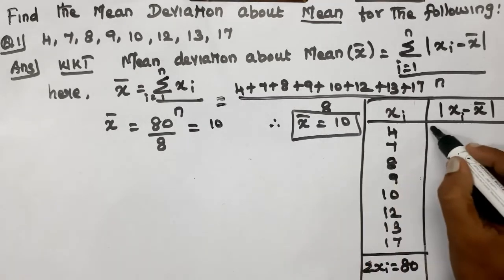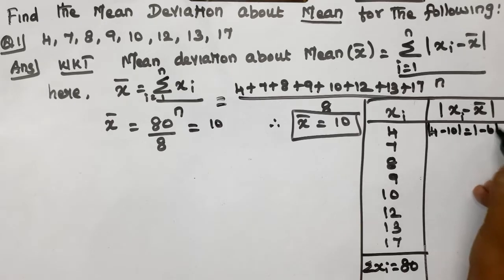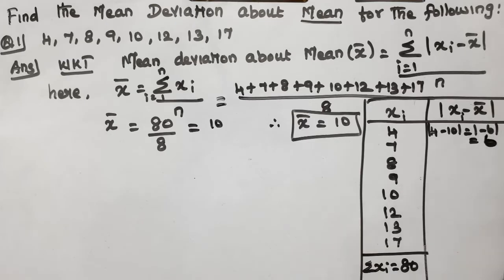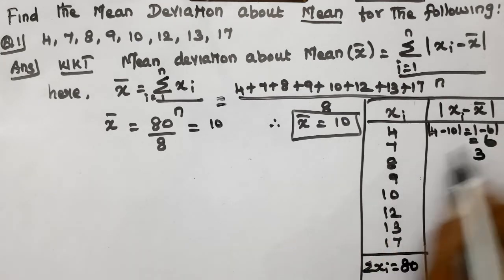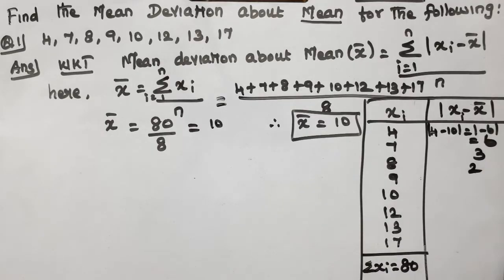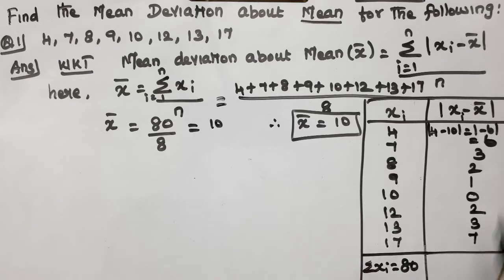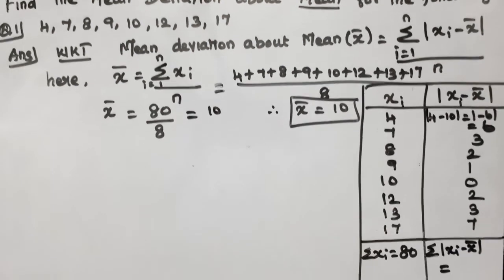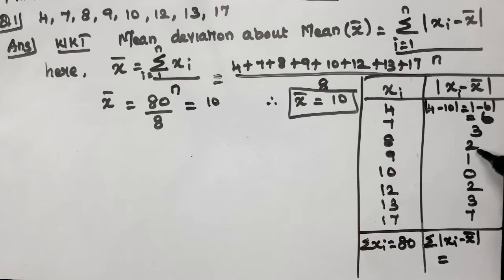Computing x_i minus x_bar: 4 minus 10 = -6, so |x_i - x_bar| = 6. Then 7 minus 10 = -3, giving 3. Then 8 minus 10 = -2, 9 minus 10 = -1, 10 minus 10 = 0, 12 minus 10 = 2, 13 minus 10 = 3, 17 minus 10 = 7. Adding all: 6+3+2+1+0+2+3+7 = 24. So summation of |x_i - x_bar| = 24.